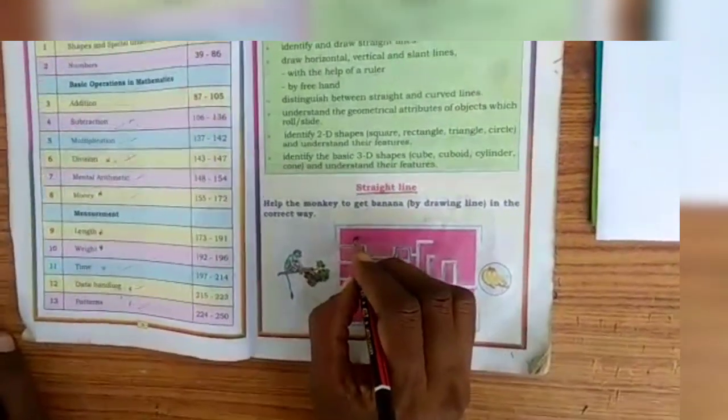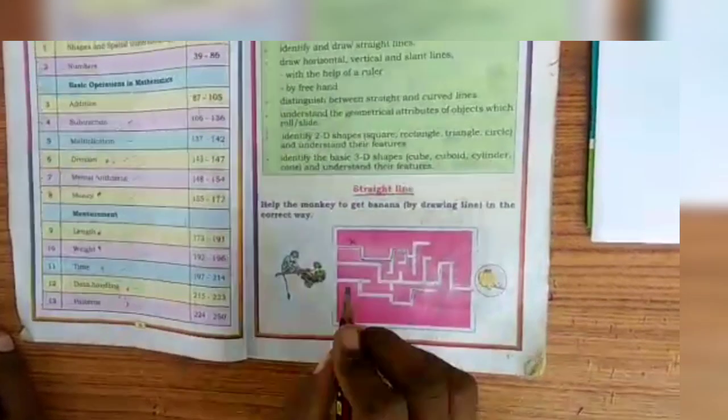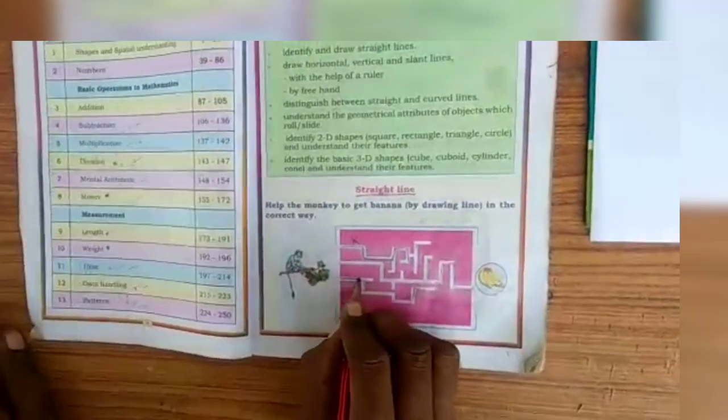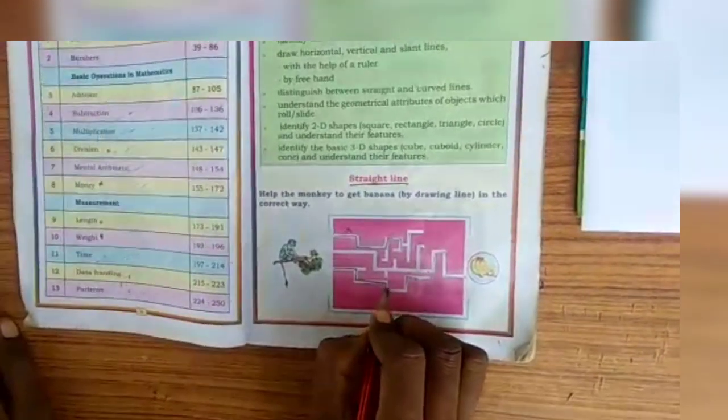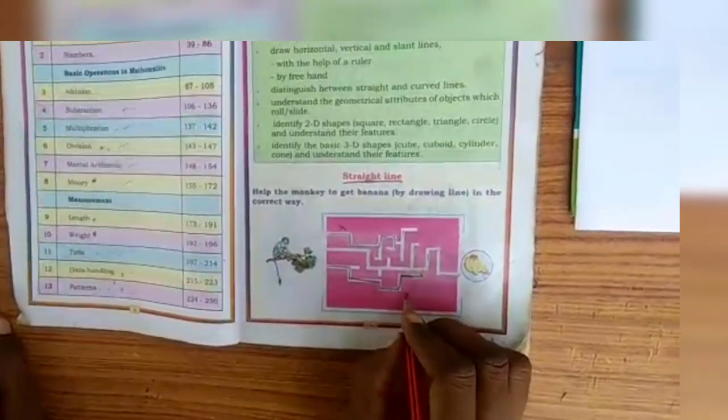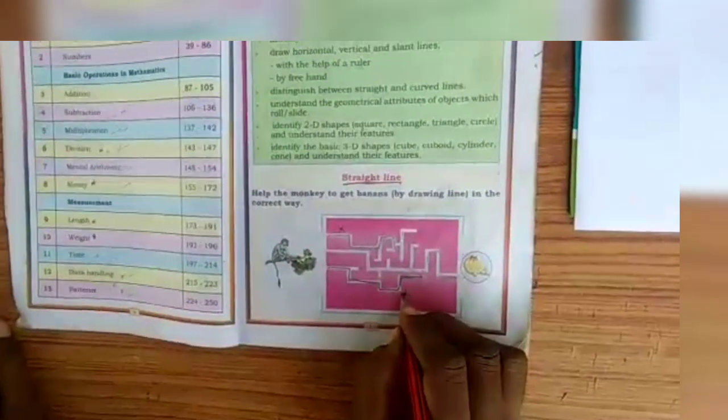So, this first one is not the correct way for the monkey to get the banana. Let's try the third line. This third line also is not the correct way for the monkey to get the banana.